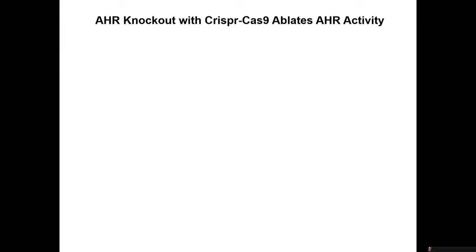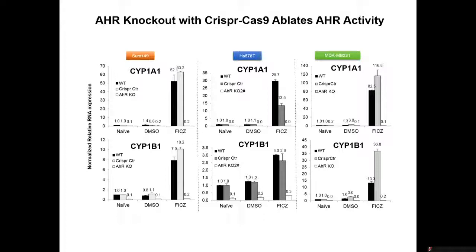For more downstream validation, we took these cells and looked for CYP1A1 in naive cells or FICZ-treated cells, which activates the AHR. The levels of CYP1A1 in naive cells are barely visible; in the AHR knockout, there's almost nothing. CYP1B1 is a little easier to detect — the constitutively active AHR tends to turn on CYP1B1 more than CYP1A1. The baseline levels in the AHR knockout go away. Under the AHR ligand activator hyperactivated state, you get big upregulation of both CYP1A1 and CYP1B1, with almost no signal in the AHR knockout. The same is true for the HS57AT and MDA-MB231 cells.